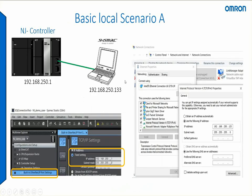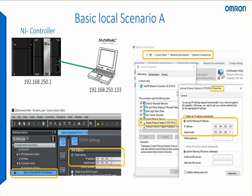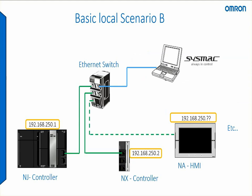This slide shows what a typical local scenario looks like, where we have a PC connected directly to a controller. We can set up the controller settings in Sysmac Studio, and also set up the PC's Ethernet LAN port using the control panel, navigating through the Internet IP setup to assign a fixed local Class-C IP address. Another option is to use a switch in this standard configuration.